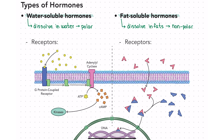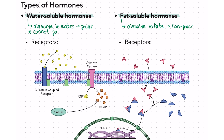Remember, the membrane of a cell is made up of a phospholipid bilayer, which is non-polar. For anything to move through that membrane without help, it needs to also be non-polar. That means water-soluble hormones are not going to be able to enter a cell, and so their receptors need to be located on the surface of the cell. These are called extracellular receptors. A water-soluble hormone will bind to its extracellular receptor, and that will cause a response on the inside of the cell.